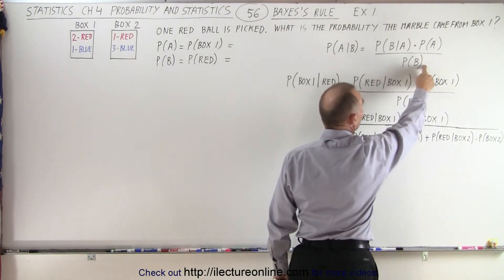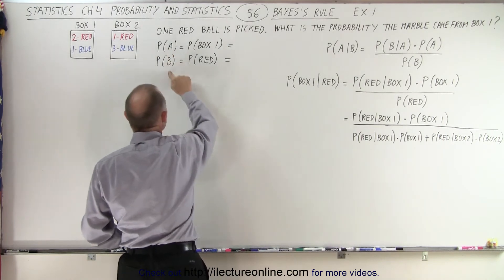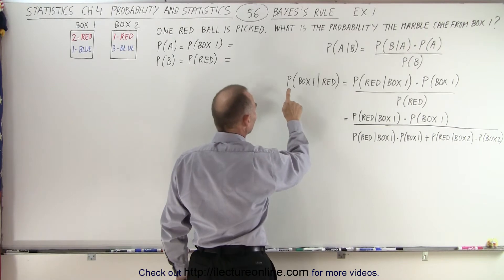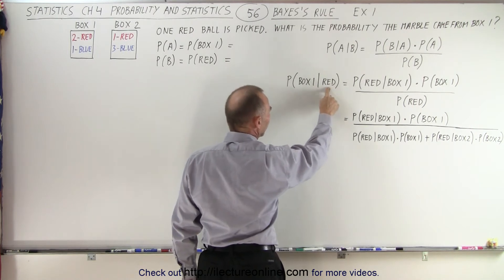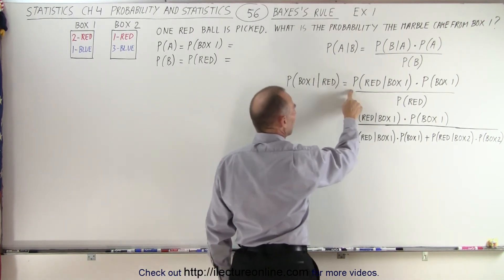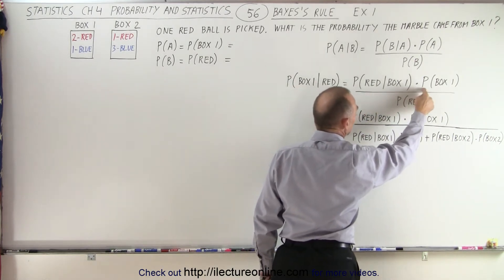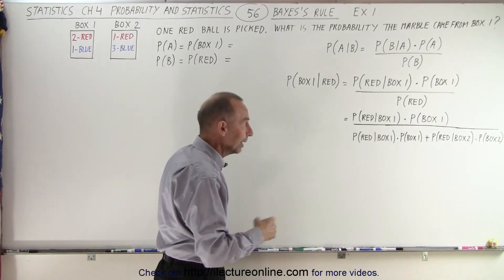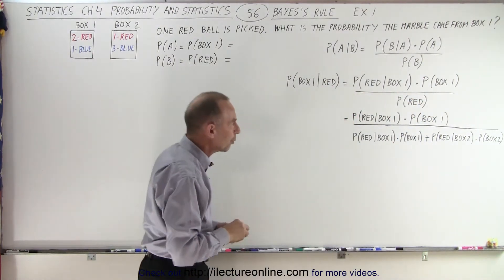Remember that in the denominator this is the sum of all the probabilities that B can occur. So if you now translate it, instead of using A and B we use box one and red, it will make a little bit more sense. Let's say we want to find the probability that the marble came from box one given that we picked the red marble. This is all the possibilities or all the probabilities summed together that we're able to pick a red marble.